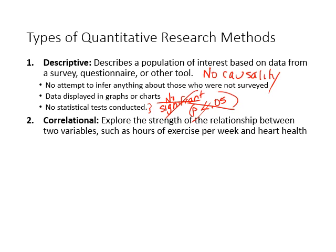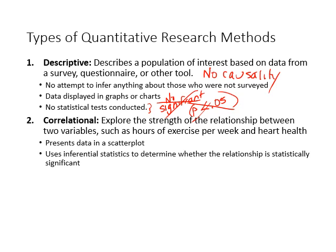Correlational studies explore the strength of the relationship between two variables — like hours of exercise per week and heart health. Does your heart health correspond with exercise per week? The data are presented in a scatter plot, and we use inferential statistics to determine whether the relationship is statistically significant. But even though we're doing a statistical test, we still have no causality.